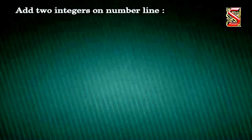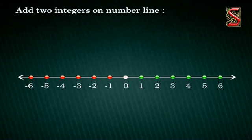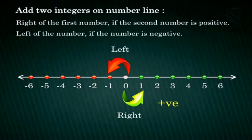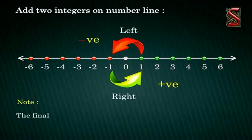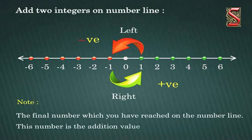Now, let us see the procedure to add two integers on a number line. Draw a number line and mark integers on it. To add two numbers, start from the point representing the first number on the number line. Move as many units as the second number to the right of the first number if the second number is positive, left of the number if the number is negative. Note the final number which you have reached on the number line. This number is the addition value of the two given integers.